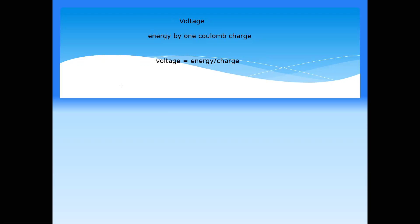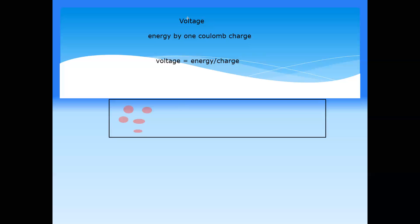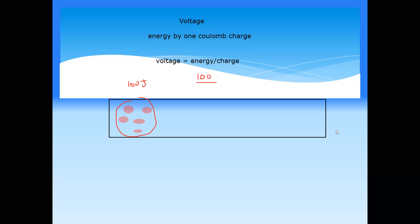For example, if we have five coulombs of charge and these charges are carrying a total energy of 100 joules, what is the voltage? Voltage means how much energy is carried by one coulomb. So the voltage equals 100 joules divided by 5 coulombs, which equals 20 joules per coulomb — that is, 20 volts.